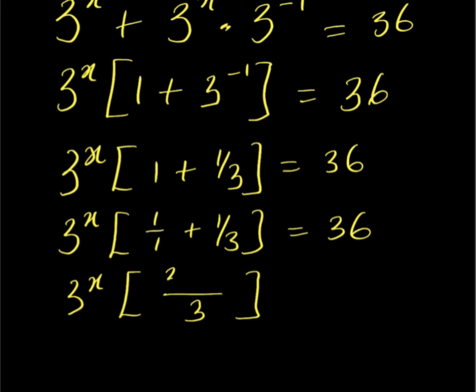3 times 1 is 3, plus 3 divided by 3 is 1, times 1 is 1. Everything is equal to 36.